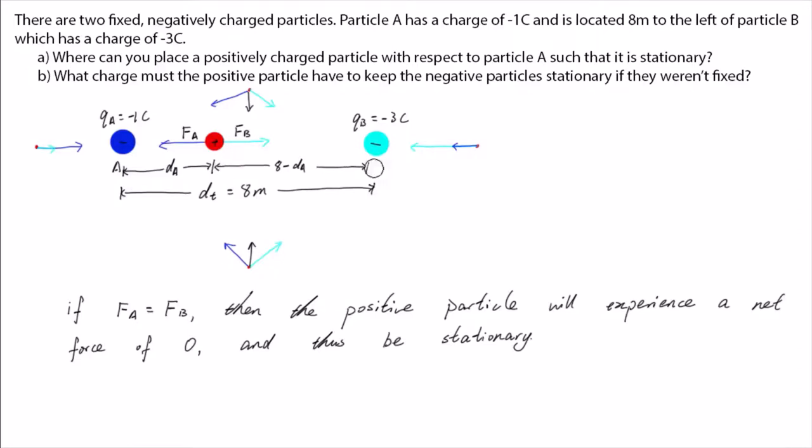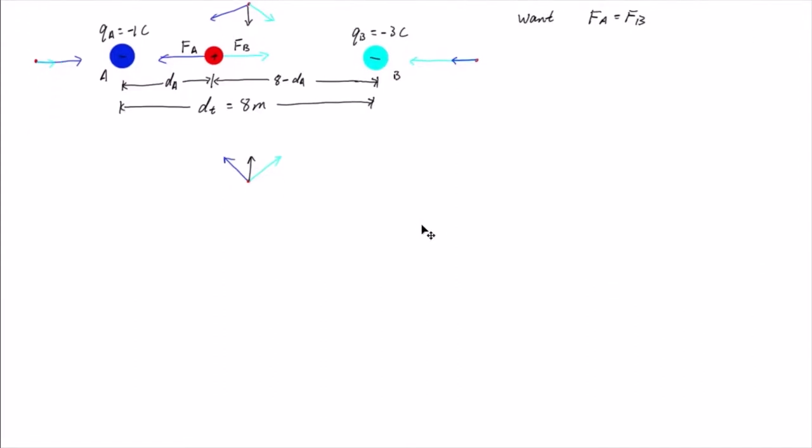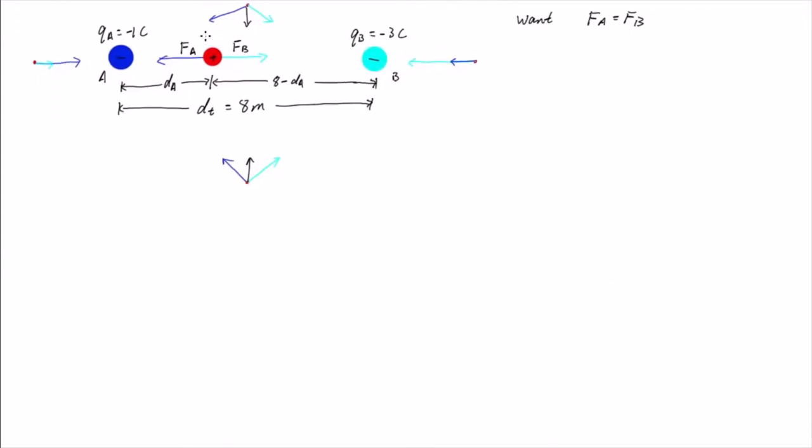Now we know that the force charged particles experience due to each other is given by Coulomb's law. Let the positive charge have a charge of qP, p for positive. So FA equals k times qP times qA divided by dA squared. And FB equals k times qP times qB divided by 8 minus dA all squared.